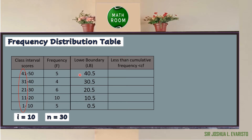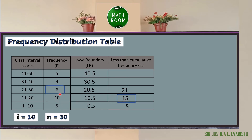To get the less-than cumulative frequency, we will start with the first class — the one with the lowest lower limit and upper limit. We look at the frequency of that class and copy it: we have 5. Then we add this to the frequency of the second class: 5 + 10 = 15. Then 15 + 6 = 21, then 21 + 4 = 25, then 25 + 5 = 30.